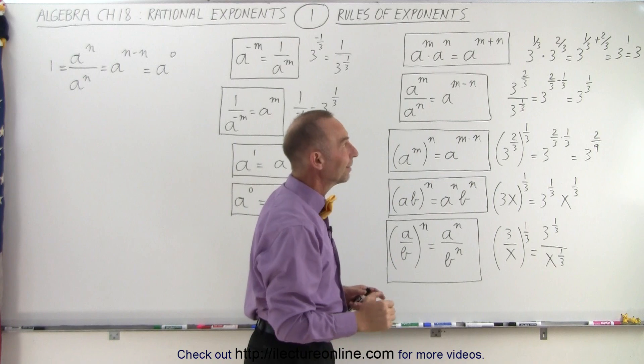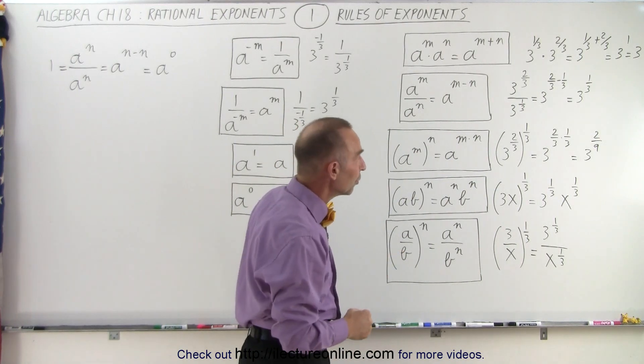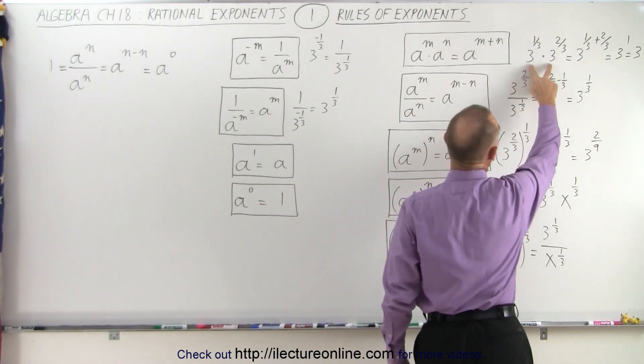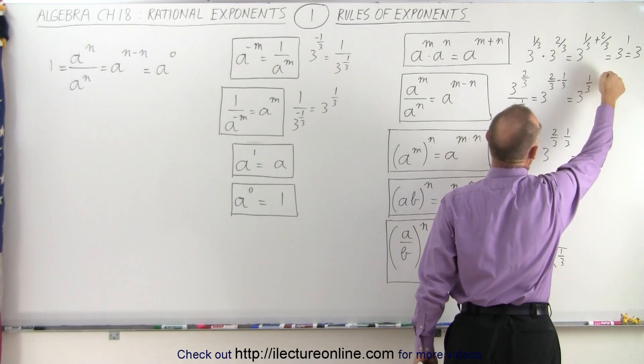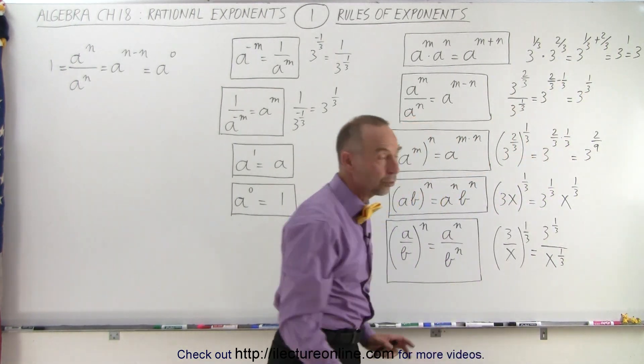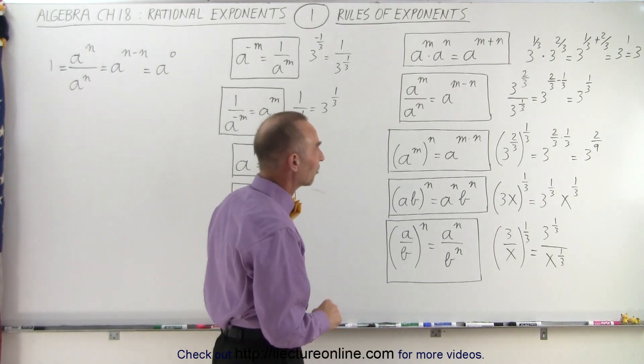Those are easier to write, but sometimes they get a little bit confused. So here you can see that the bases are the same. So we add the exponents, one-third plus two-thirds is one, and of course, three to the one is three. So the rules are exactly the same for rational exponents.